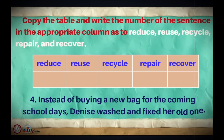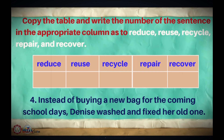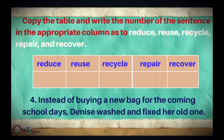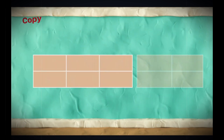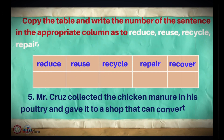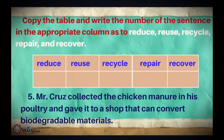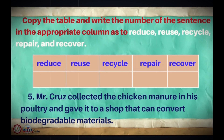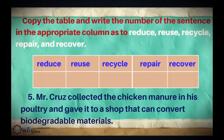Number 4 — instead of buying a new bag for the coming school days, Denise washed and fixed her old one. Number 5 — Mr. Cruz collected the chicken manure in his poultry and gave it to a shop that can convert biodegradable materials.